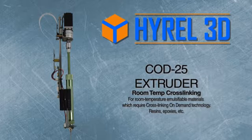The COD25 extruder is for room temperature emulsifiables which require photo initiation of crosslinking by a UV LED array.